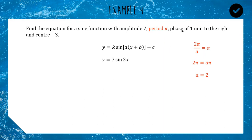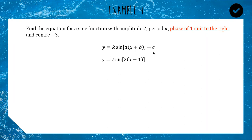A phase of one unit to the right means we need a minus 1 inside: instead of 2x we write 2(x − 1), which shifts x to the right by one unit. For center minus 3: your typical sine function oscillates between 1 and −1, so its center is 0. If we add a minus 3 to the whole function it shifts everything down by 3, making that our new center. So instead of going between 7 and −7, the graph goes between 4 and −10, which has an average of −3.